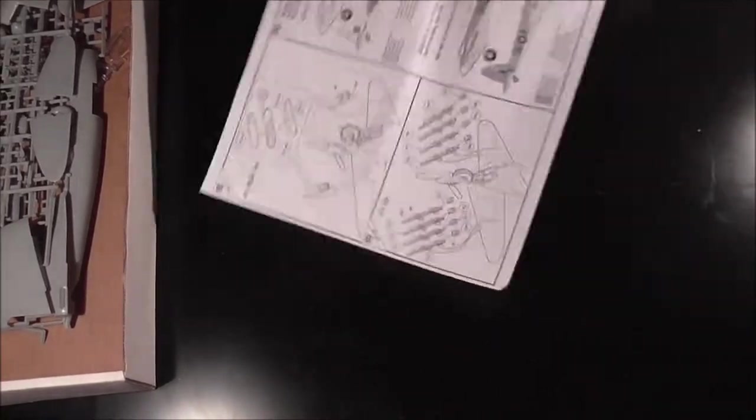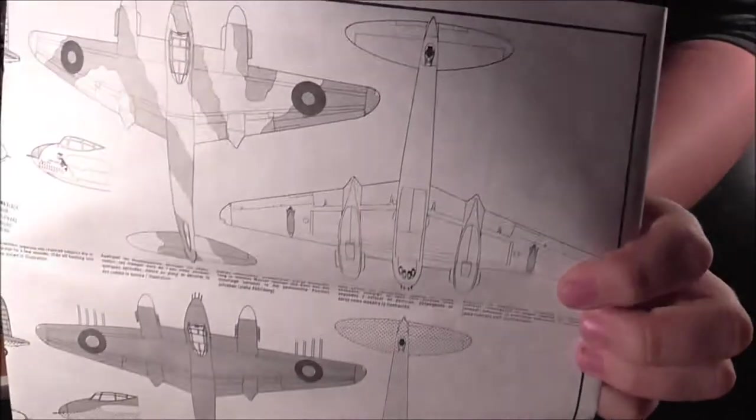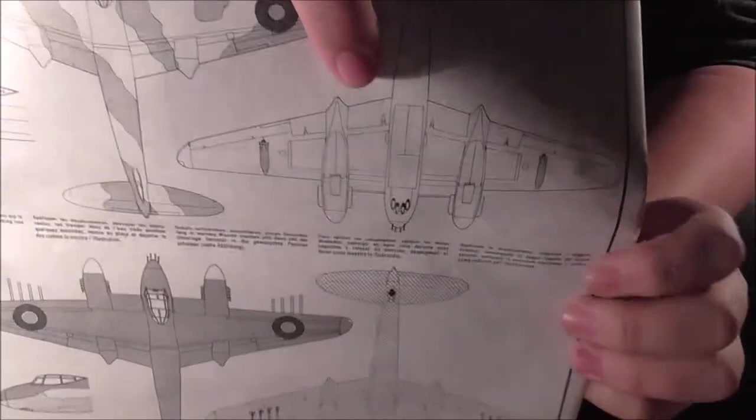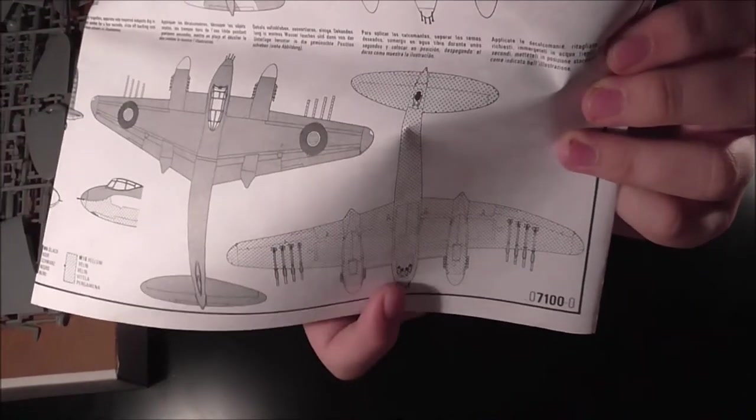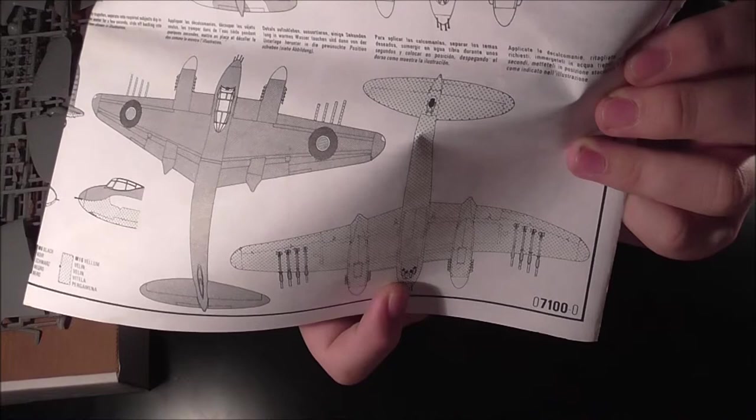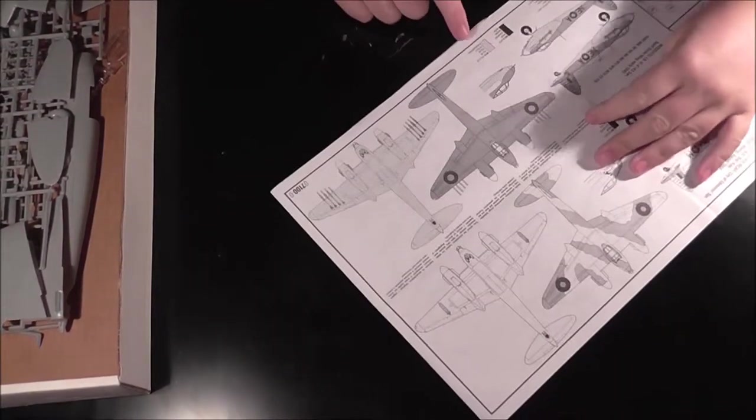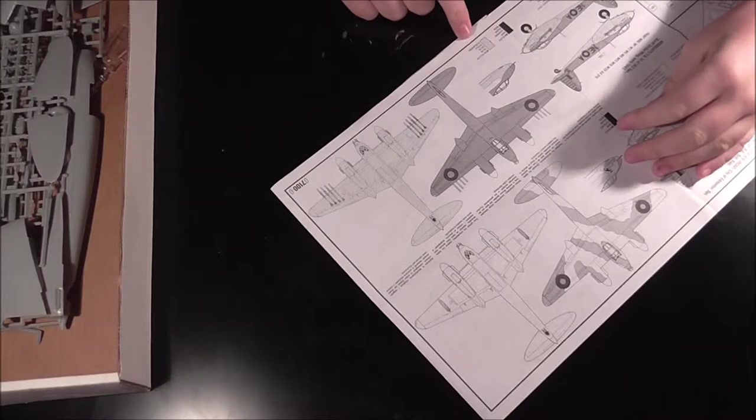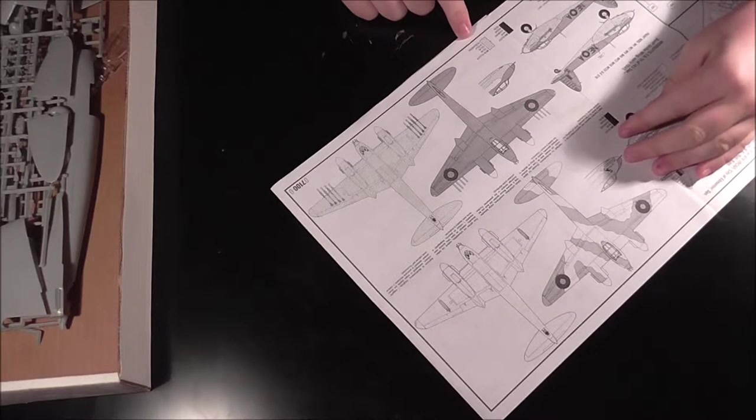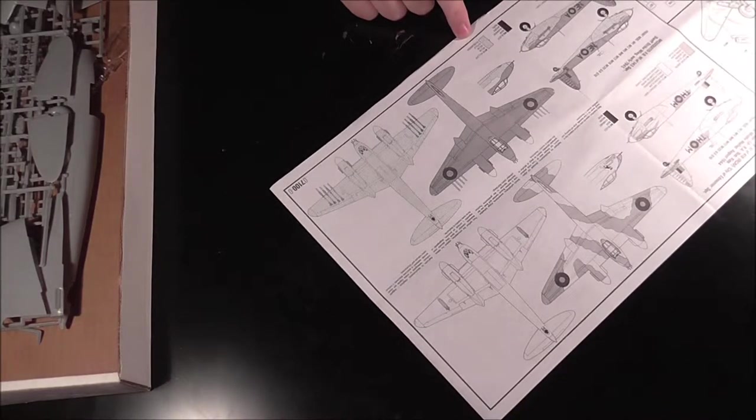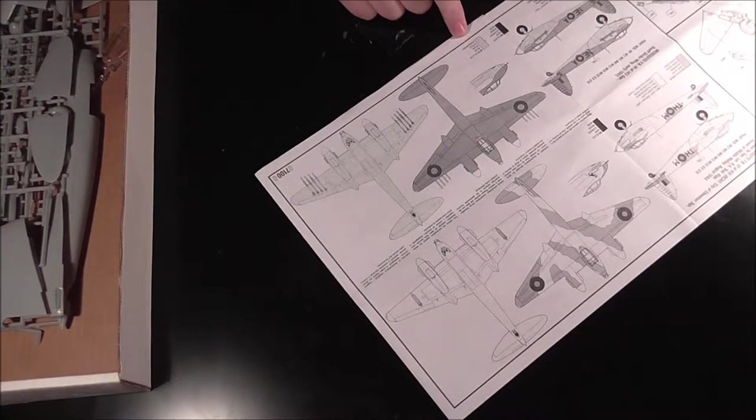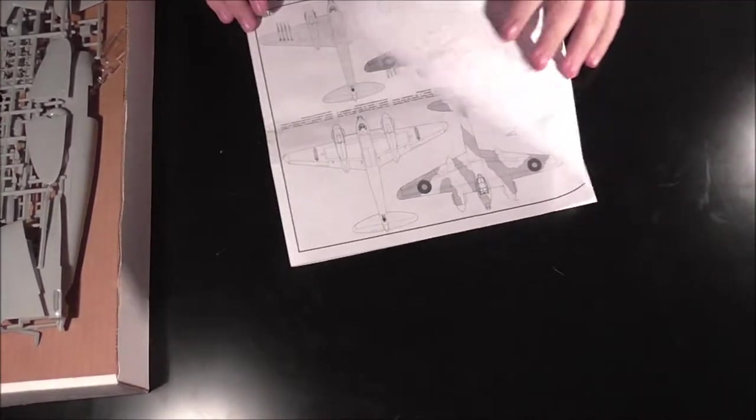And option B is 143 Squadron Banff Strike Wing. So, obviously, if you look over here, one version has the bombs and the other one doesn't. So, that's one of the differences between the two things. There's not much else to say about that really. Yeah, so, that's the instructions done and dusted. So, I'll pop them over there.